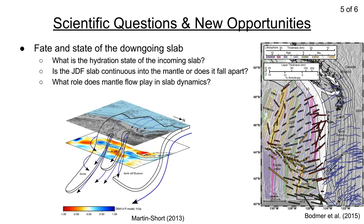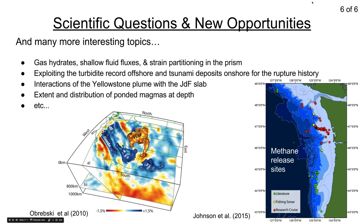The fate and state of the downgoing slab is an important question. The slab becomes hydrated as it approaches the trench, and its hydration state sets up all subsequent events during subduction. Once subducted, questions arise about whether the slab remains continuous with depth or falls apart as seen in recent tomography. Other topics include gas hydrates and fluid fluxes in the prism, exploiting the offshore turbidite record for rupture history, interactions between the Yellowstone plume and the subducting slab, and the extent of ponded magmas at depth.